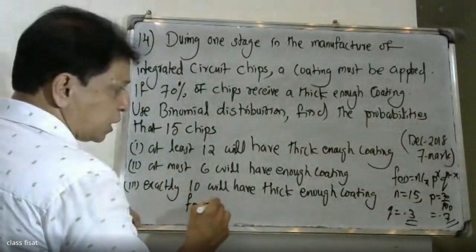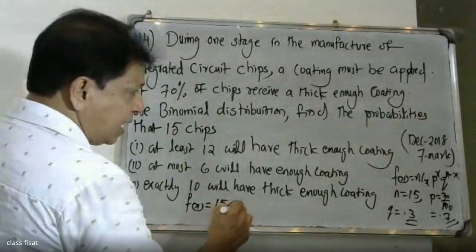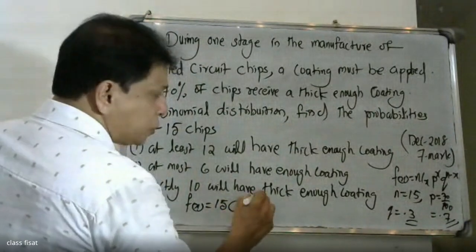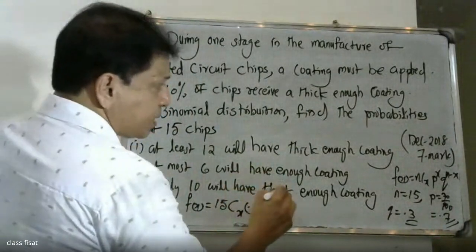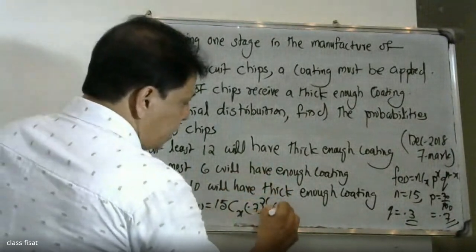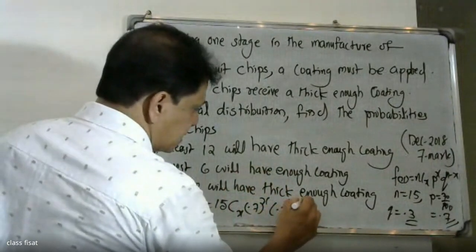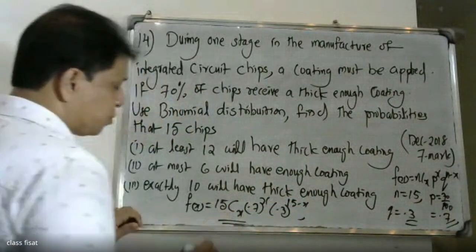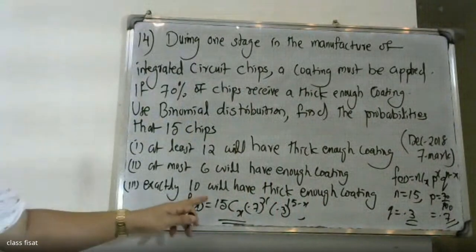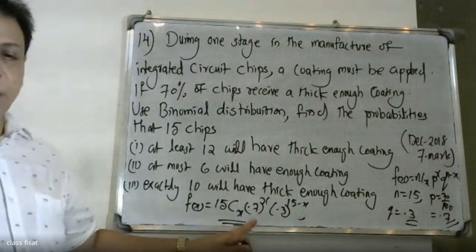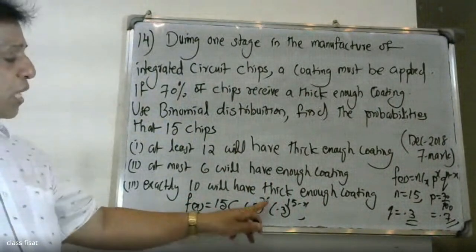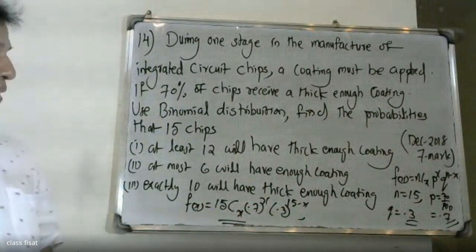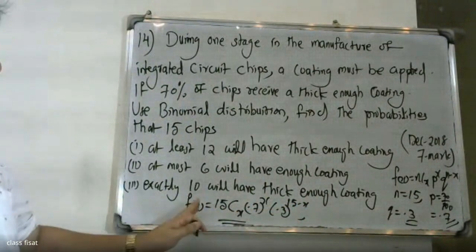The distribution function of X is equal to F(x) = 15Cx * 0.7 raised to x * 0.3 raised to (15 minus x). This is the probability function we will use for all three parts of the question.